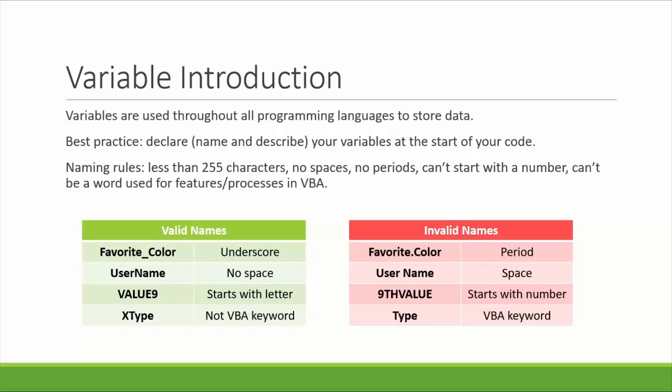For example, if we look at the valid names, favorite_underscore_color would be a valid variable name because it uses an underscore in the place of the period that we see on the right under invalid names. At the second line, username is invalid when it has a space in between the two words, but is a valid name when we remove that space and make it all one variable. Ninth_value starts with a number, which makes it an invalid variable name, but if we flip that around and say value9 instead, it becomes valid. Lastly, type is a word in VBA that is used to declare data types for various items. Because type has an action and feature already associated with it, we can't use type as a variable name. However, if we put an X or something in front of the word type, it becomes a valid variable name.